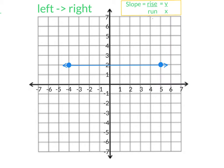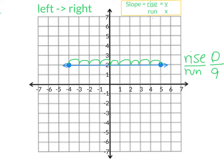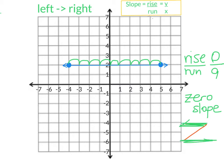Here we have a different situation — we don't have a rise. As you can see, this is not rising anywhere. So we have zero rise. My rise is zero. However, my run is one, two, three, four, five, six, seven, eight, nine. This situation is called zero slope. There is no slope — you can see there is no hill-like slope at all. How can we remember this is zero slope? If you notice the Z in zero, you can see that these lines go horizontally, just like this line. So zero slope is horizontal.